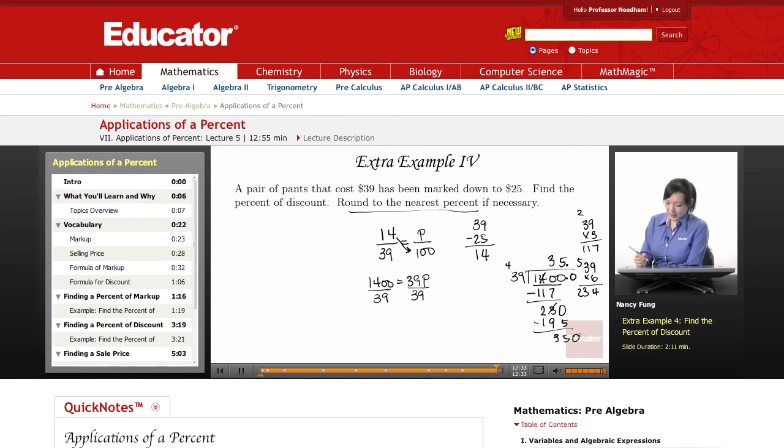Bring down the 0. And 39 will go into 350 about 8 times. Okay, so that's telling me that I'm going to round up to 36%. So the percent of discount is about 36%.